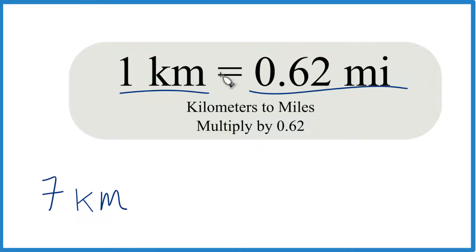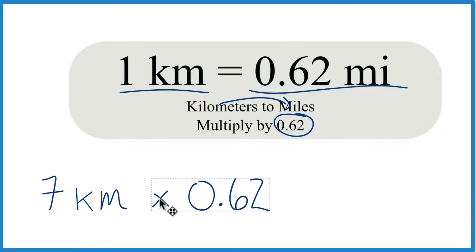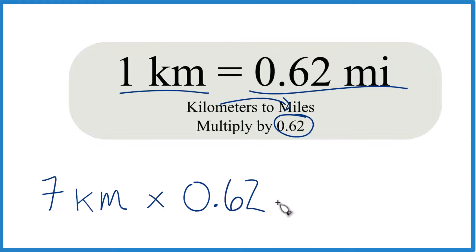When we go from kilometers to miles, we're going to multiply by 0.62. So we take our seven kilometers here, multiply times 0.62, and that's 0.62 miles in one kilometer per kilometer.